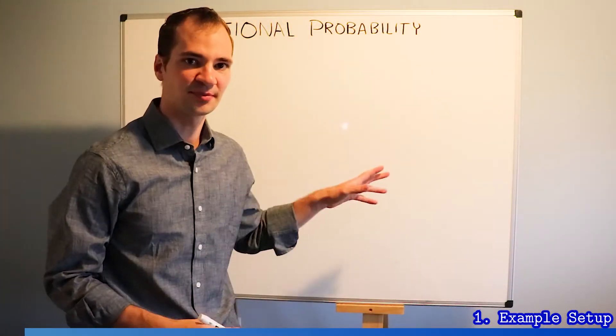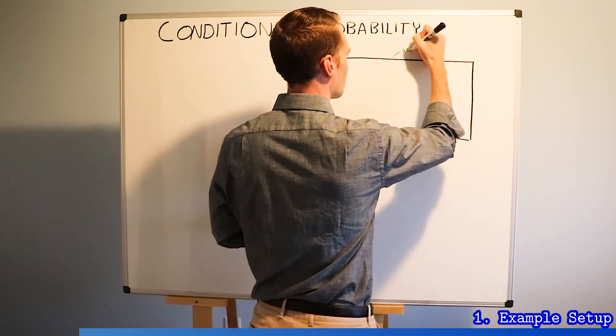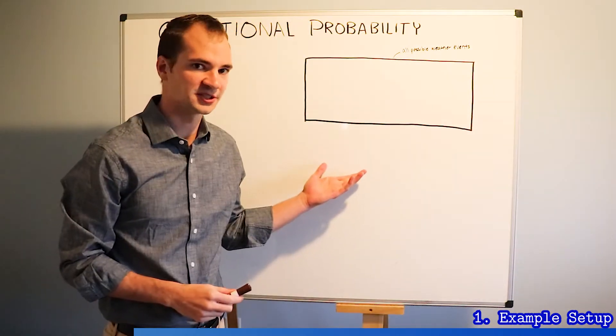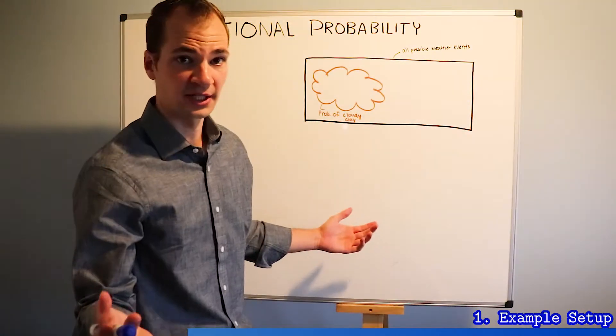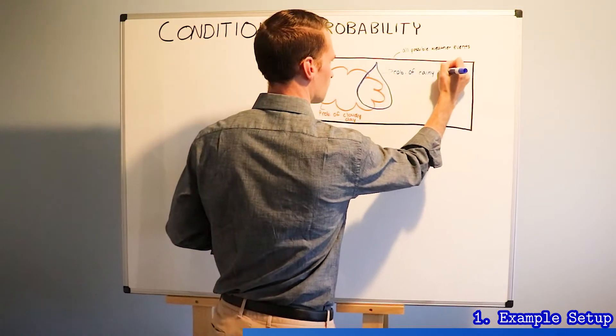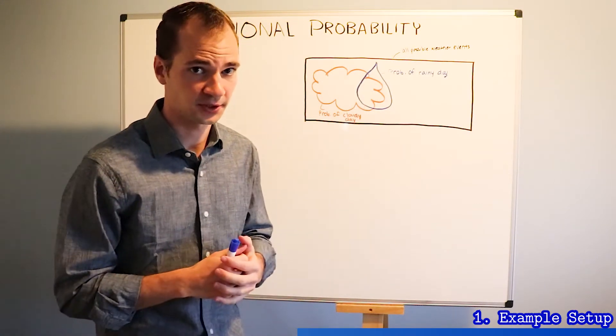Let's look at the weather. This black box represents all possible weather events and naturally all possible combinations of weather events. Included in this possible weather is of course a cloudy day. Likewise is the event of a rainy day. The size of each of these shapes represent the probability that will occur.